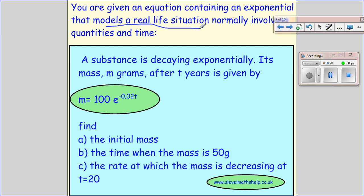So in this example we have a substance that is decaying exponentially, and exponentially means that the power is the variable. Its mass, m grams after t, is given by this equation here. We want to find the initial mass, the time when the mass is 50 grams, and the rate at which the mass is decreasing when t equals 20.